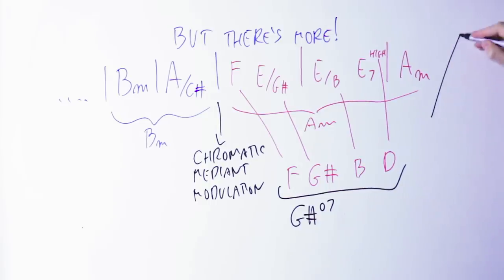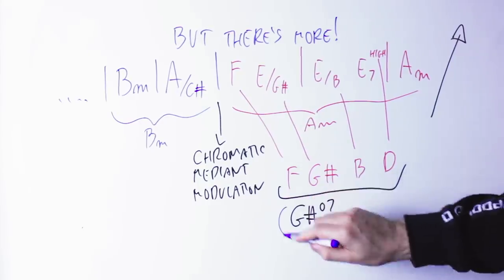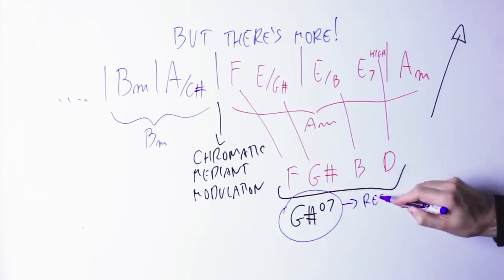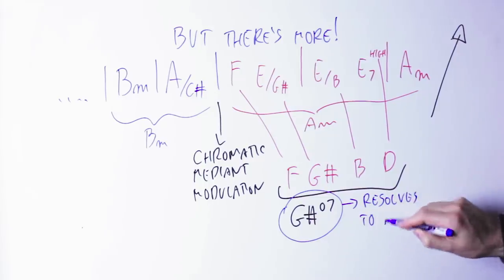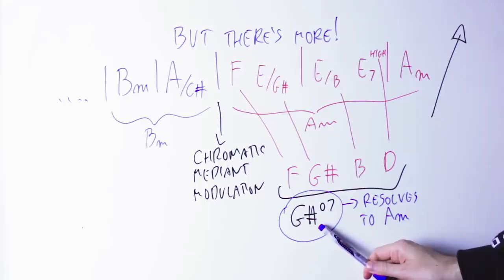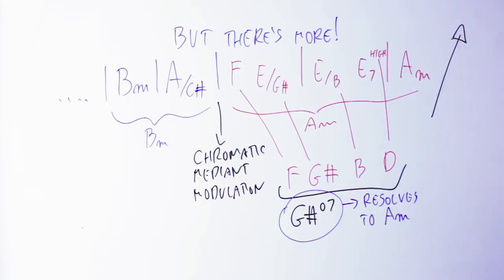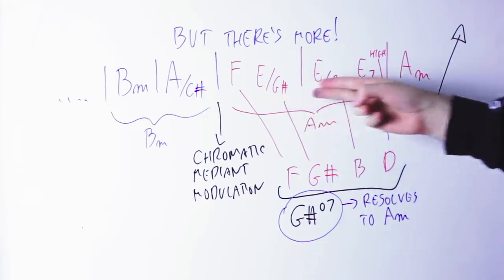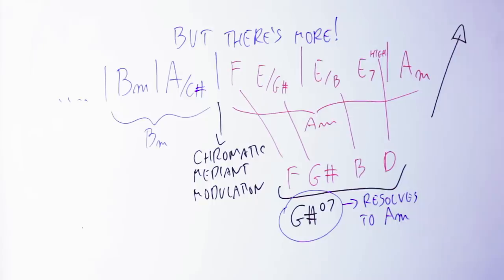As we have already seen in the video about doing modulation with diminished chords that you can find clicking on the link on the top right, this diminished chord, this G sharp diminished 7th chord leads you to the key of A minor. So you see, this F to E section here spells also a G sharp diminished 7th chord. So whether you want to see this as a 6-5-1 in A minor or as a diminished chord that points you to A minor, all this creates a very smooth modulation going from the B minor key to the A minor key.